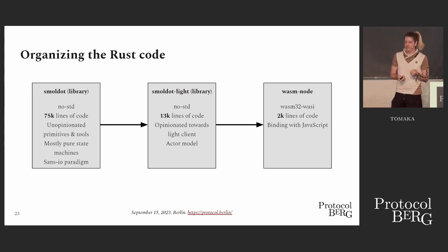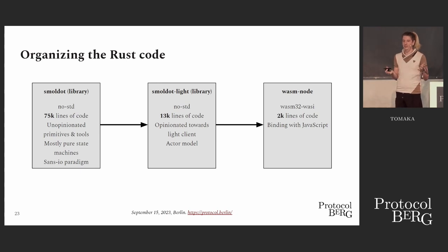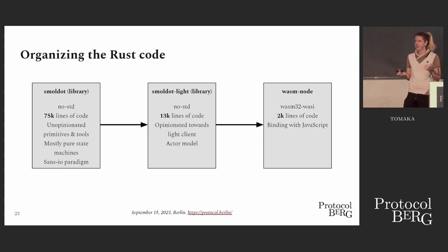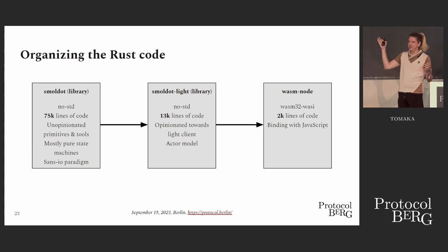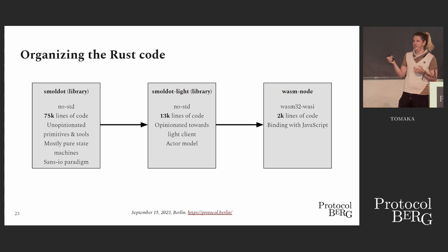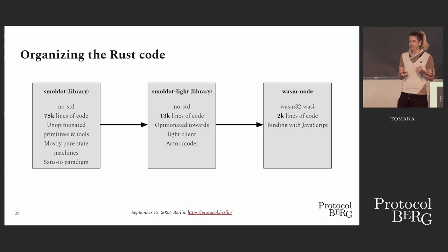The Rust code is organized with a no-std library — smoldot — which is very generic. You can do anything with it. It's only primitives, only tools, pure state machines, meaning it does not talk directly to the operating system. Instead, it propagates all networking and I/O to the highest levels of the code, and only the highest levels communicate with the operating system — here meaning the browser or Node.js.